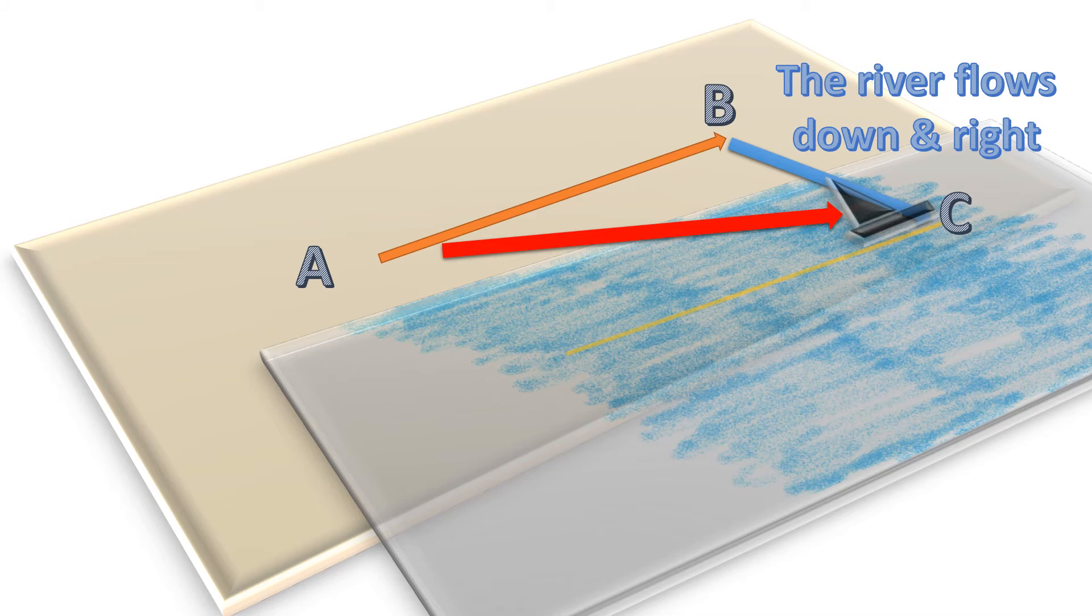Studying motions by analyzing each component separately is called superposition. We will use superposition to explain the monkey and the hunter problem.